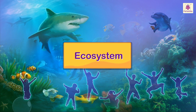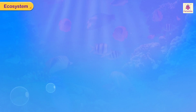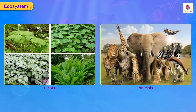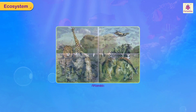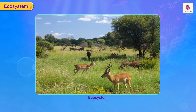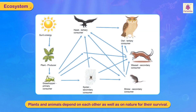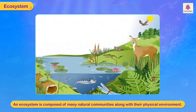Ecosystem. Plants and animals together form an ecosystem in the natural environment. They depend on each other as well as on nature for their survival. An ecosystem is composed of many natural communities along with their physical environment.